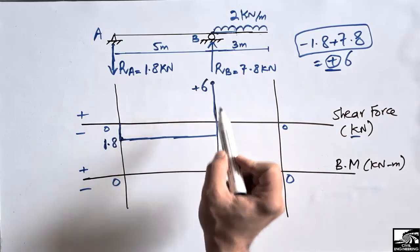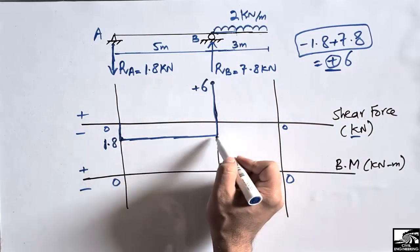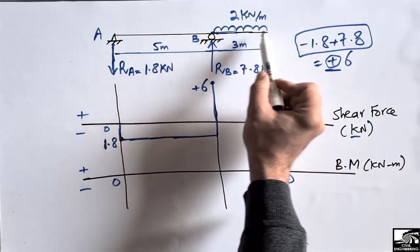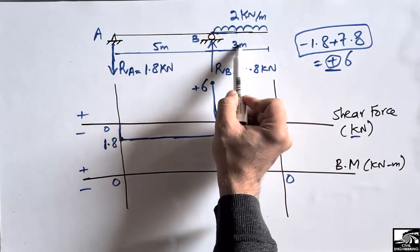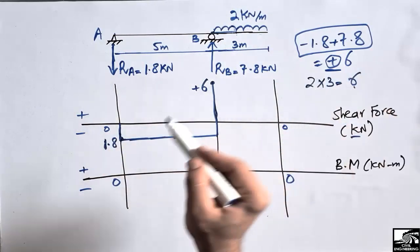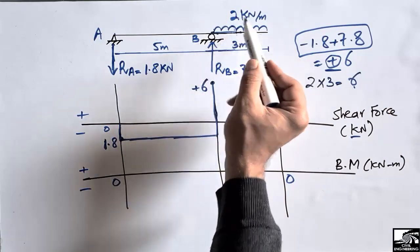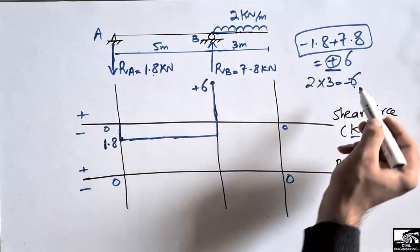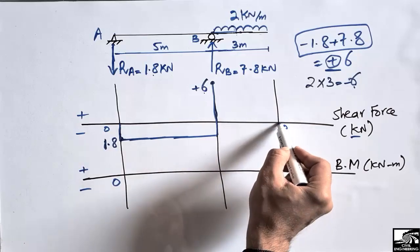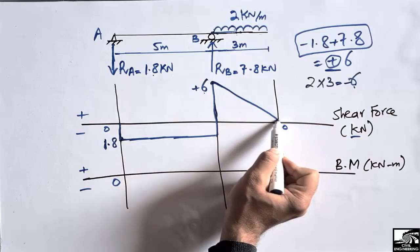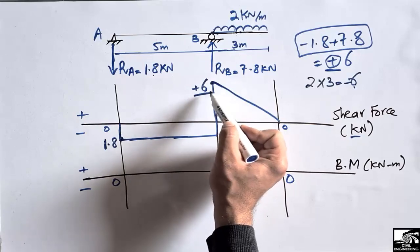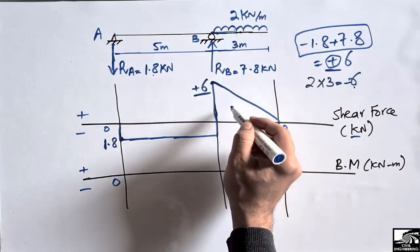We draw the shear force line from −1.8 up to +6. Then there is a uniformly distributed load acting downward over 3 meters: 2 × 3 = 6 kN, which is negative. Adding −6 to +6 gives 0, so the shear force returns to zero at the end of the beam. This is the complete shear force diagram, with a negative region and a positive region.